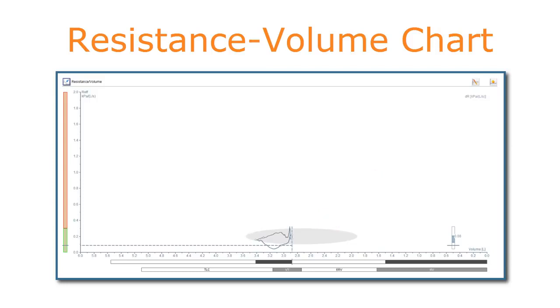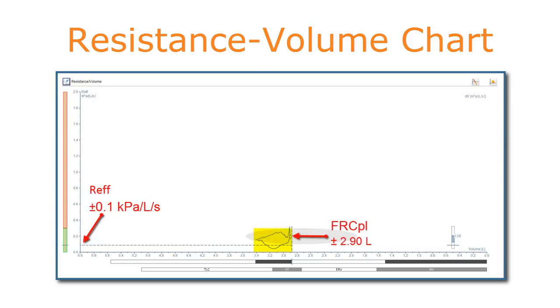In this example, airway resistance, the surface of the resistance-volume loop, and the breathing level are normal.